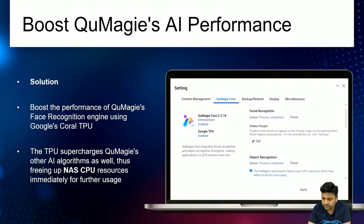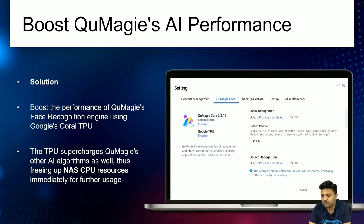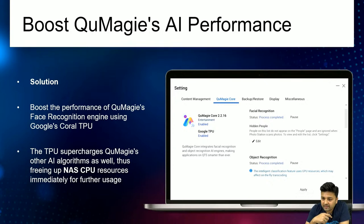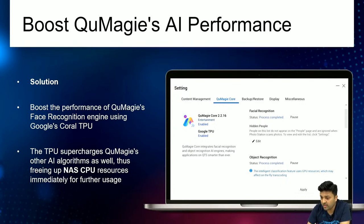The solution is simple: users can boost the performance of QMaji's face recognition engine using Google's Coral TPU. The TPU supercharges QMaji's other AI algorithms as well, freeing up the NAS CPU resources for further usage. The whole idea is that with the help of TPU, your CPU can be released for other tasks. Normally, if face recognition is running on many photos, the NAS may slow down because all CPU resources are consumed by AI algorithms.